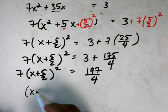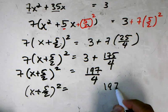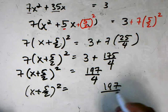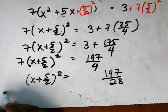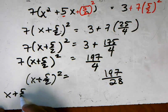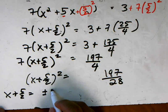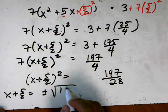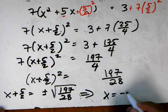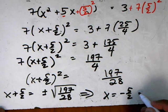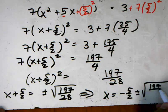This gives me (x + 5/2)² = 197/28. Then take the square root of both sides: x + 5/2 = ±√(197/28). This gives me x = -5/2 ± √(197/28).